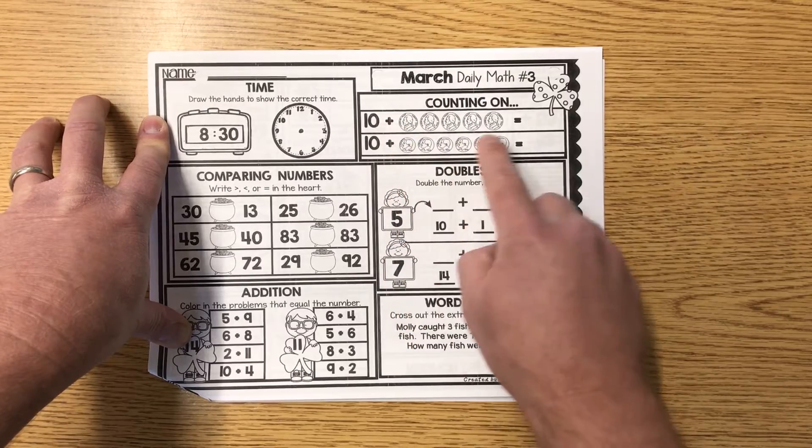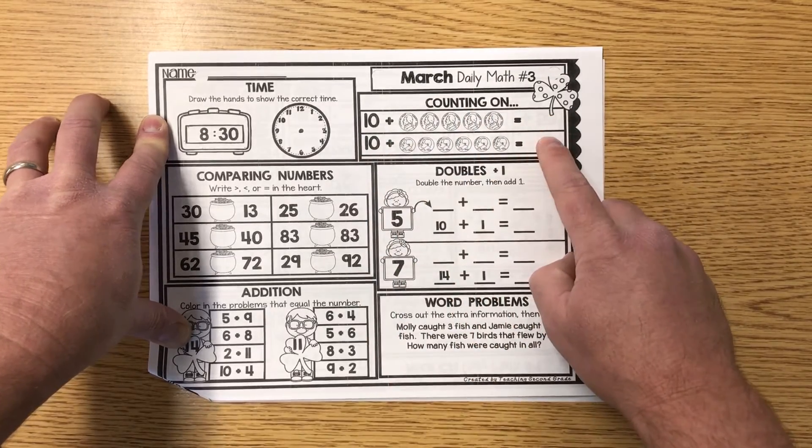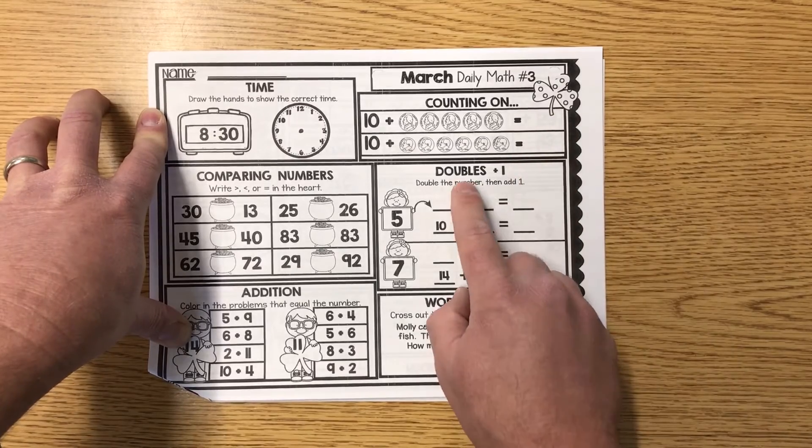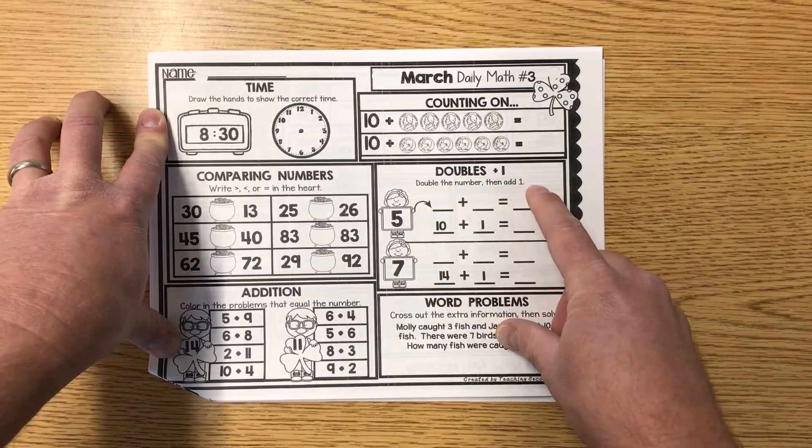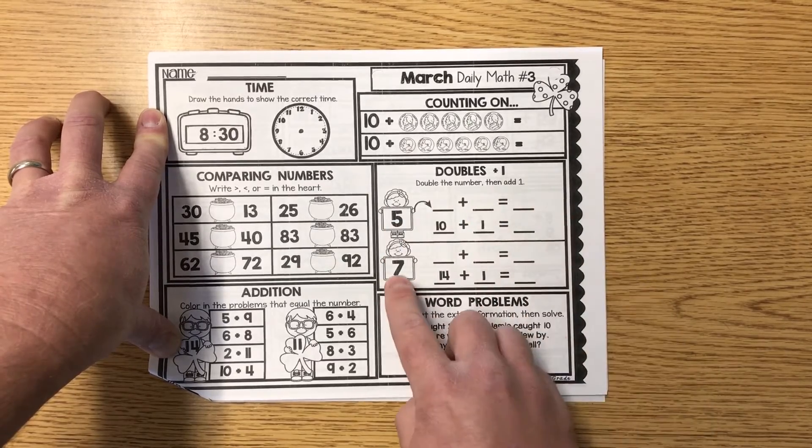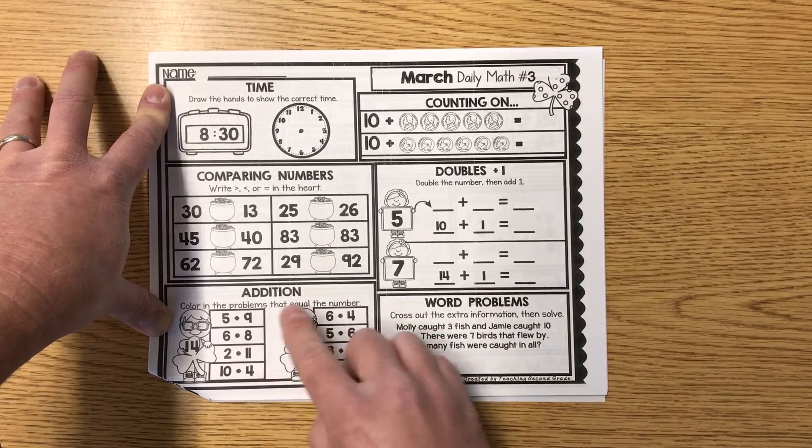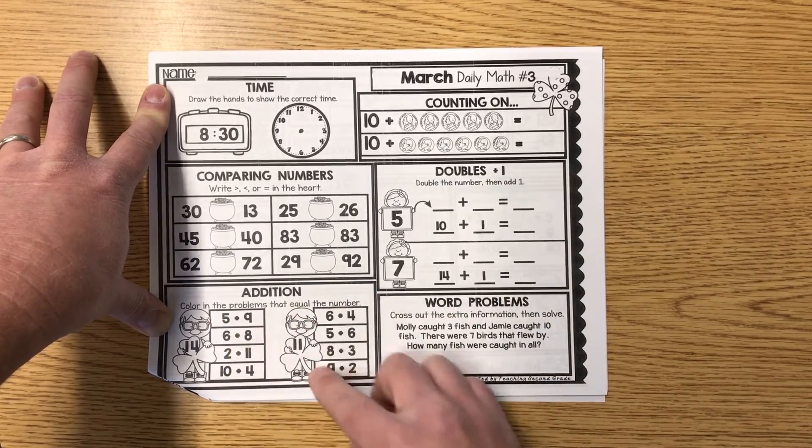Counting on. 10 plus all these gives you that. Fill out your total. Doubles plus one. Double the number, then add one. Double the five, then add one. That's your example. Double to seven, then add one. Addition. Color in the problems that equal the number. The number's right here.